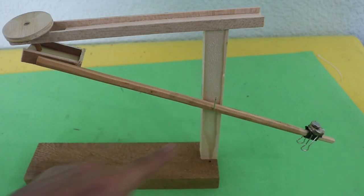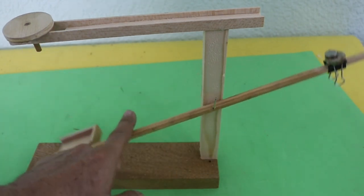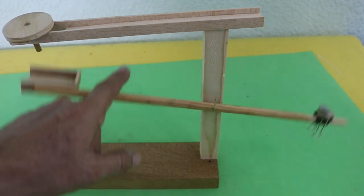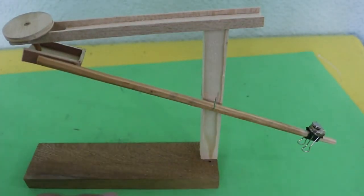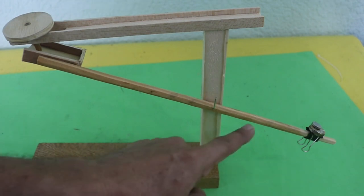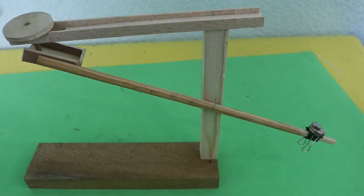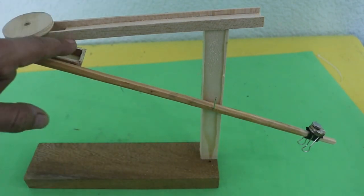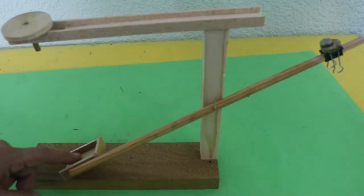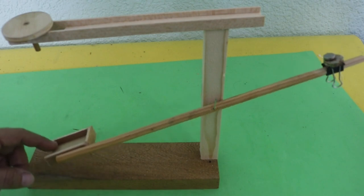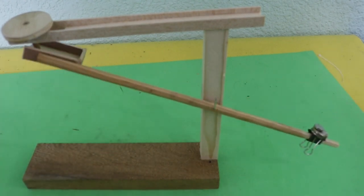This wood stick has a pivot here, so it can move in this way. It has a counterweight here, so it is normally in this position, but when the marble falls here the weight makes it move in this way. The marble moves away and returns to its position.